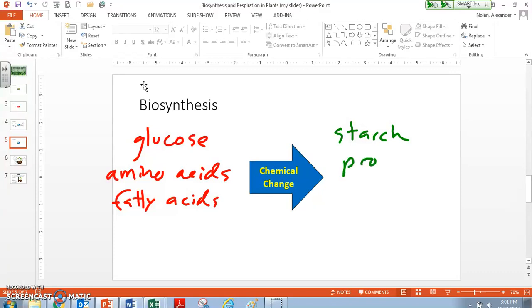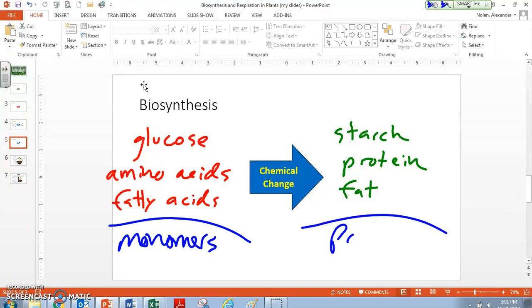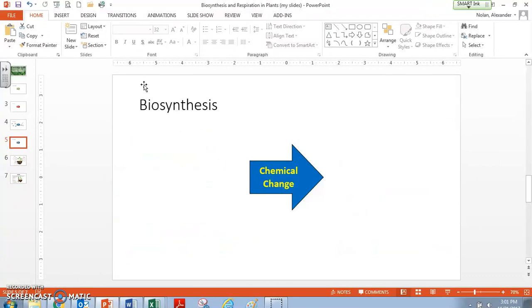We go from amino acids to proteins. We go from fatty acids to fats. These over here are our monomers, and over here, these are our polymers. Just a really quick reminder of what these chemical changes look like. We're building larger molecules here. The important thing to remember for biosynthesis is that cells need to do biosynthesis in order to grow. Biosynthesis builds larger molecules from smaller molecules, and any part of any organism that's growing must be using biosynthesis.